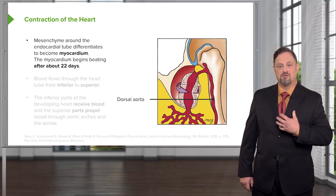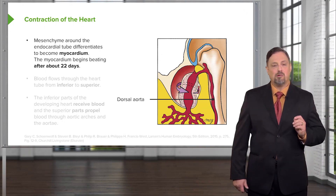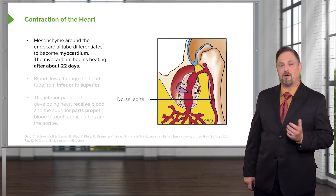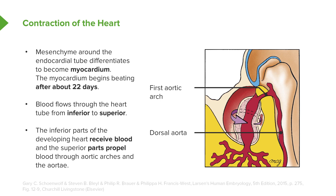The heart has more or less found its normal position in the eventual thorax and it starts beating about 22 days into development. This is important because at this point the embryo can't get much larger without a heart — simple diffusion of gases and nutrients is no longer sufficient. We need to have a circulatory system. The heart starts pumping at 22 days, bringing blood in from inferior, peristaltically pumping it out superiorly, and into a paired set of dorsal aorta on the posterior body wall. Blood that's deoxygenated comes in inferiorly, gets pumped superiorly, and travels on either side of the gut tube through what are called aortic arches.